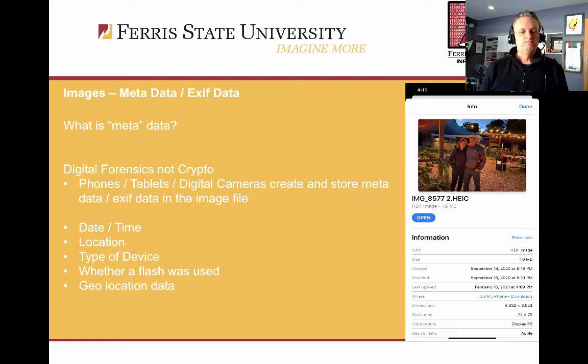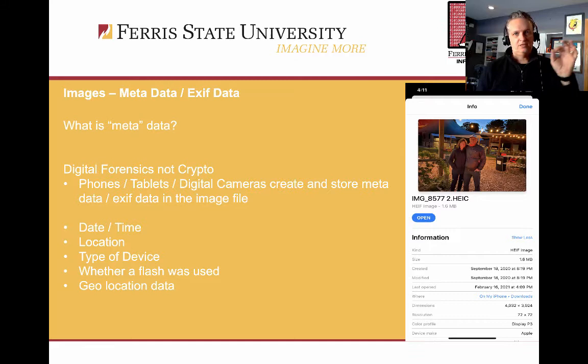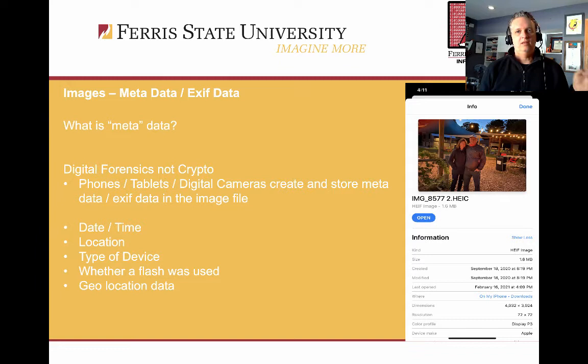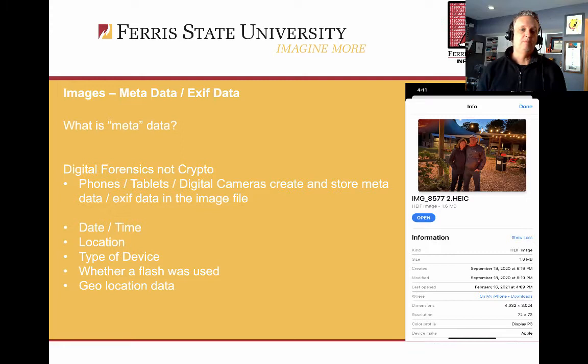Metadata is a term often used in computing curriculum and computer science — it's really data about data. The actual data in this case is the image itself, all the pixels that make up the image. The metadata is data about the data: where was this picture taken, what device, who took it, what was the date and time. That is data as well, and it doesn't change the image in any way — it's information about the image. When we talk about images, this is often referred to as EXIF data.